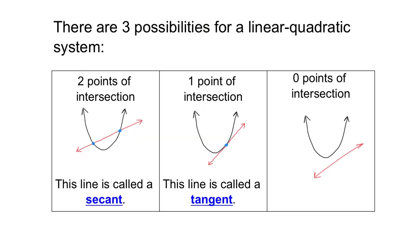We're going to solve problems involving the intersection of a linear and a quadratic function. When solving a linear quadratic system, there are three possibilities: two points of intersection, one point of intersection, or no points of intersection. If you have two points, the line is called a secant. If you have one point — the line just grazes the parabola — it's called a tangent. If there are no points of intersection, there's no special name; they just don't intersect.